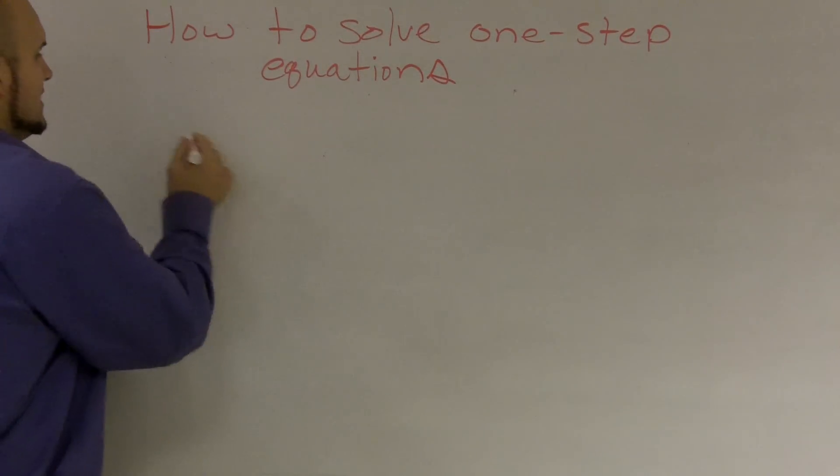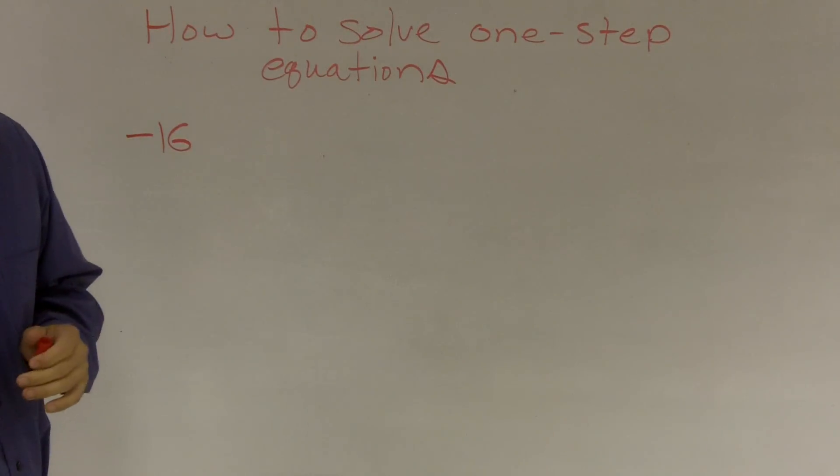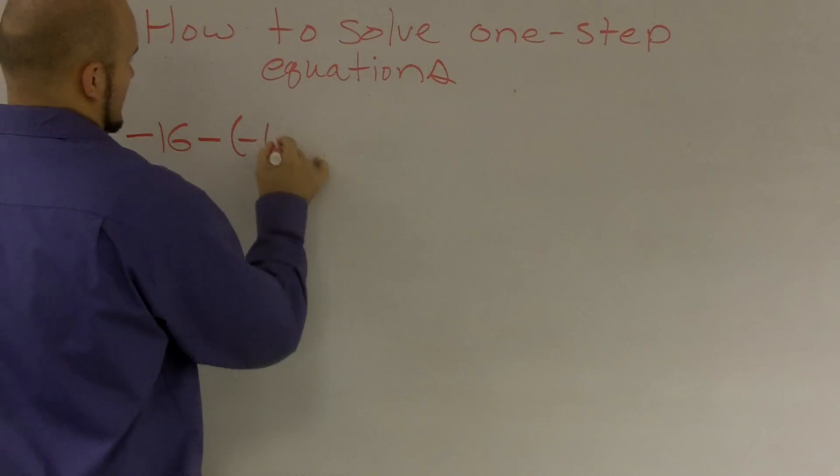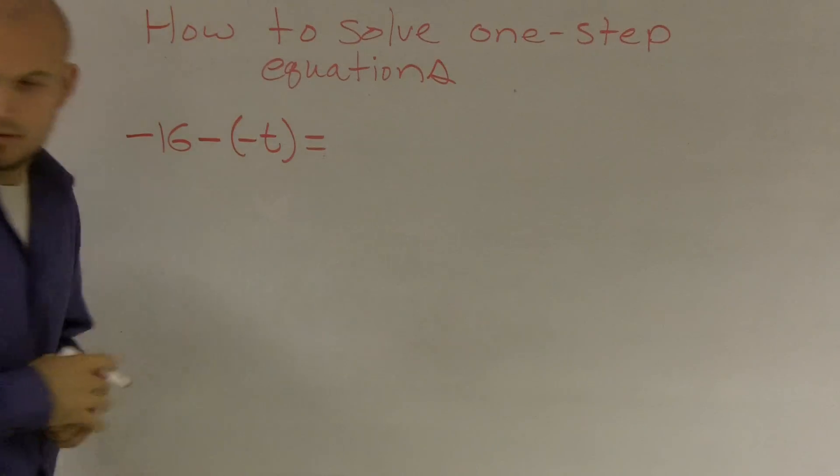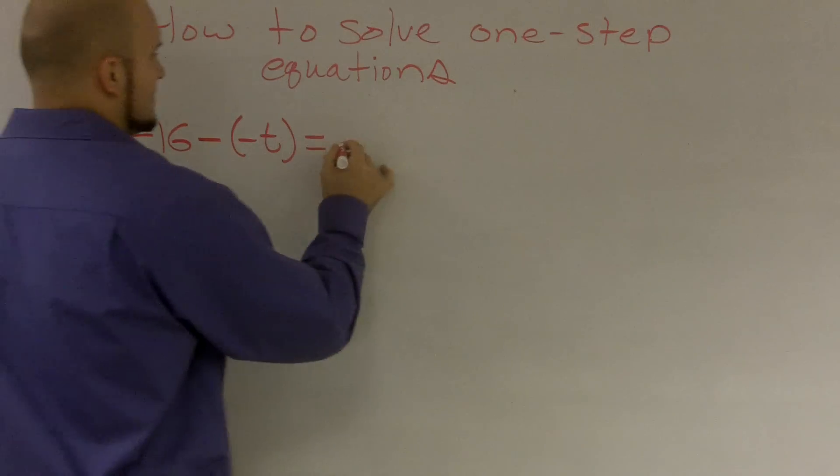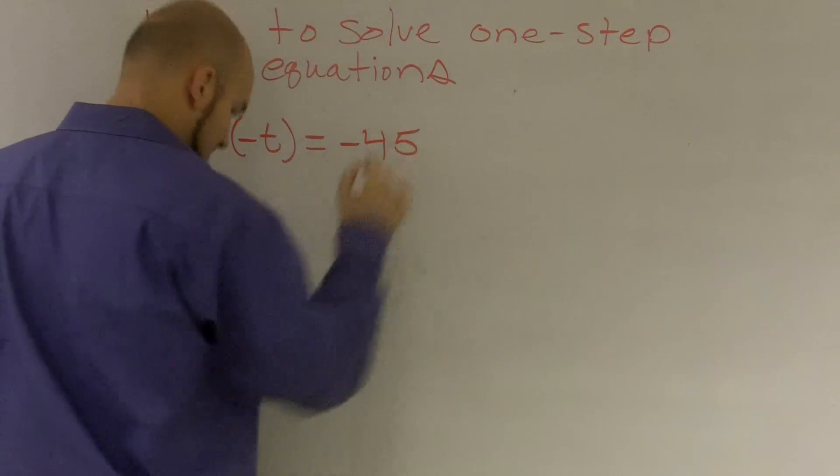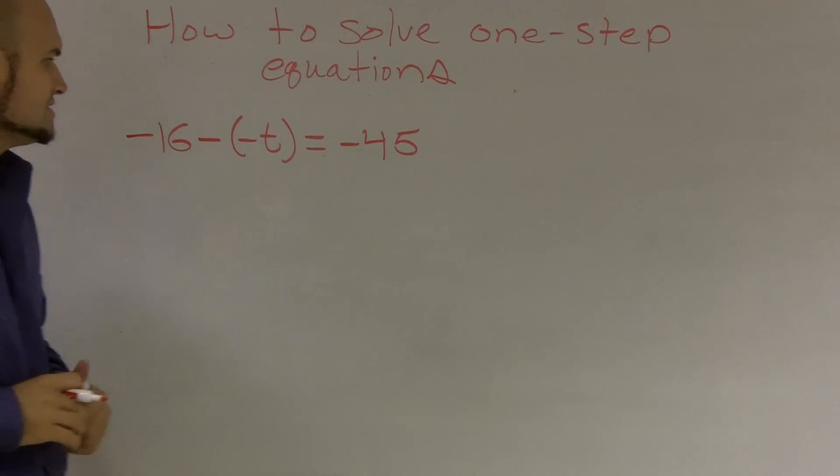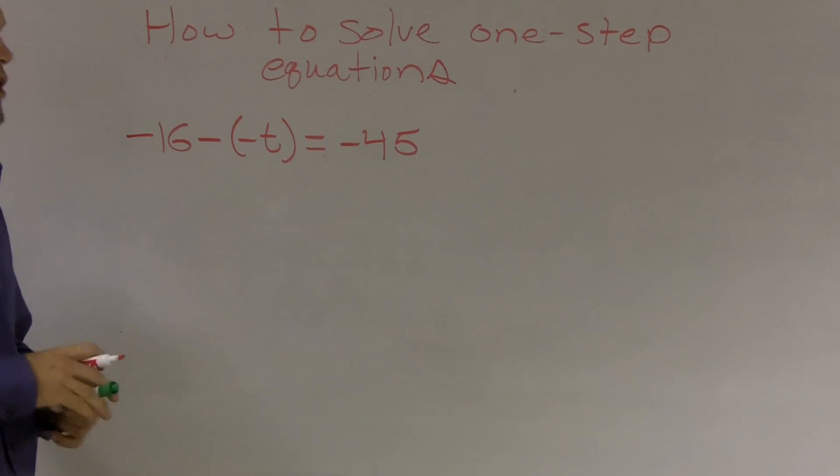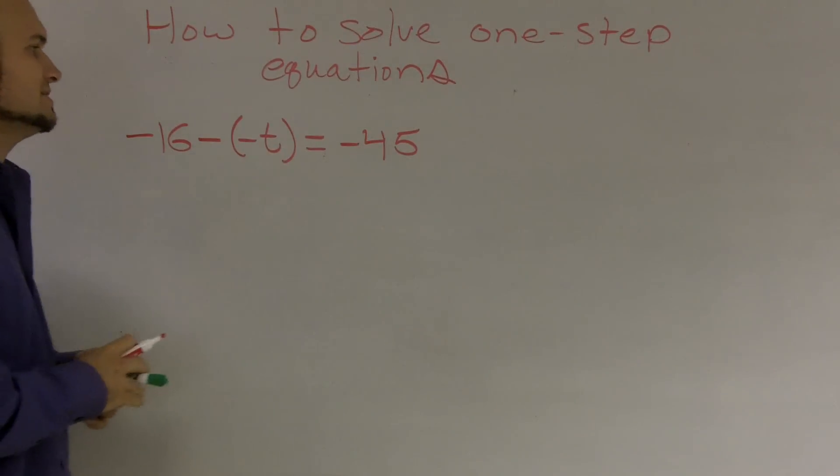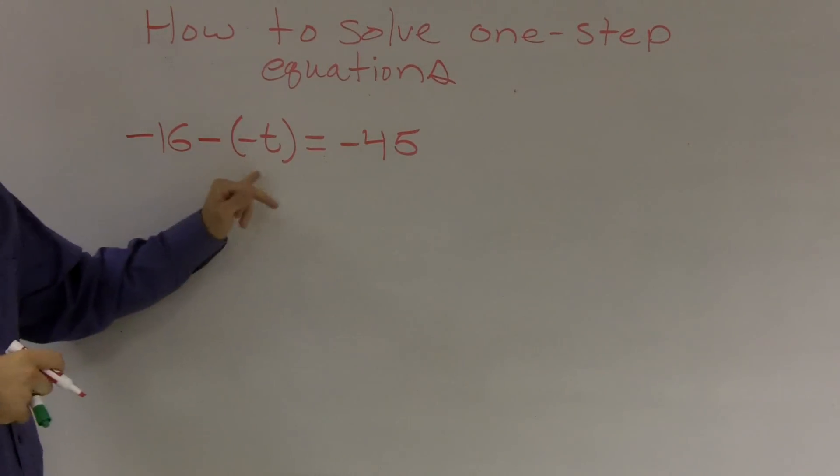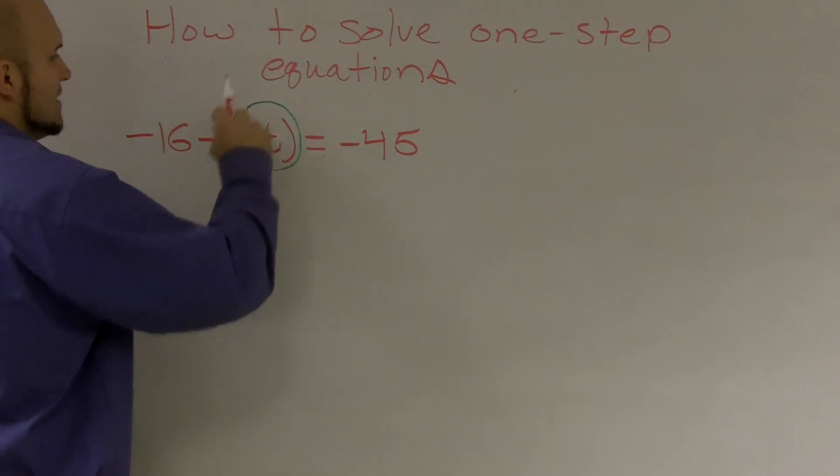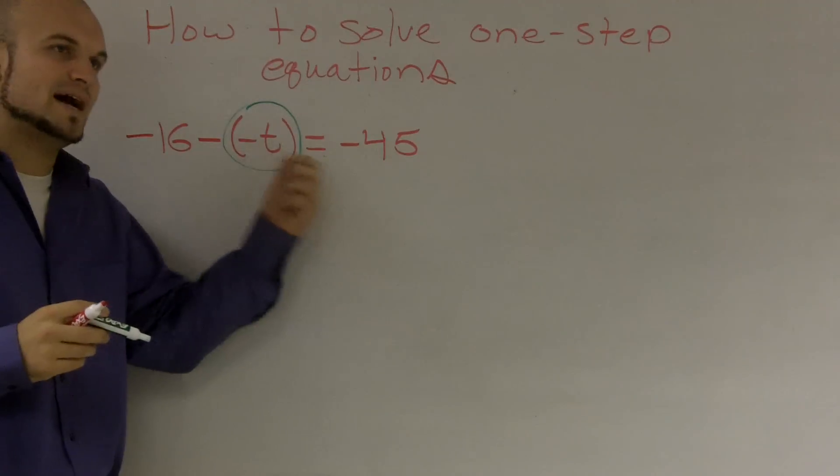The first one is negative 16 minus negative t equals negative 45. When solving one-step equations, the first thing I like to do is always circle the variable. That's going to tell me the variable I need to solve for. So I'm going to circle this variable. That reminds me that I need to get this variable by itself.